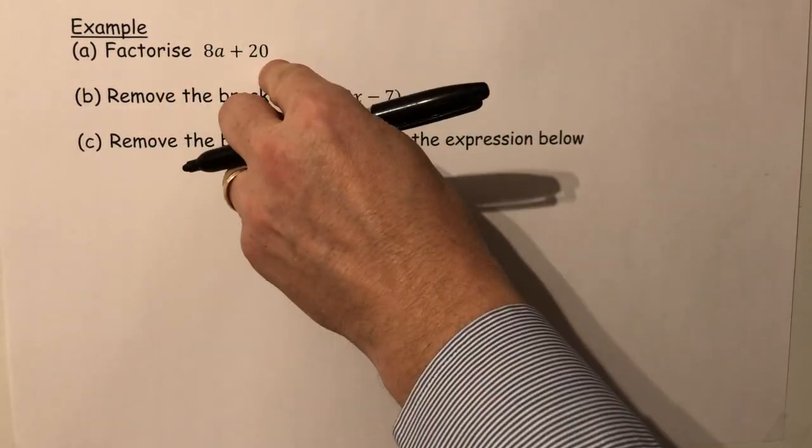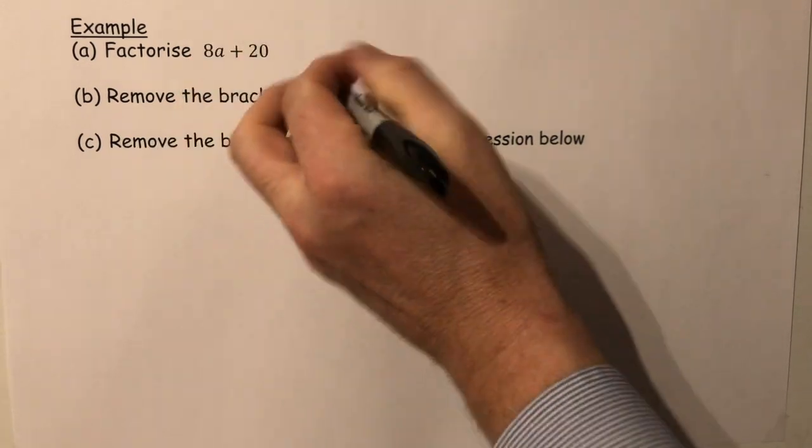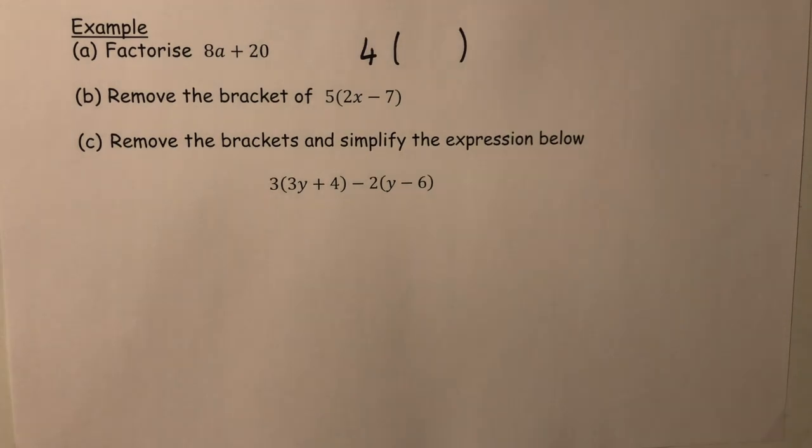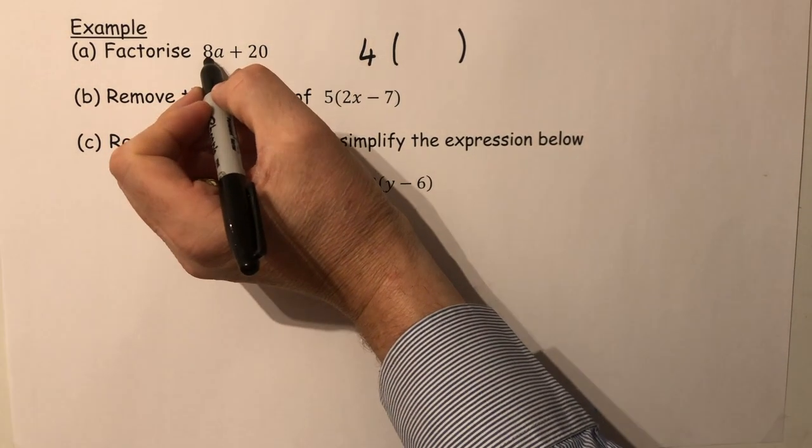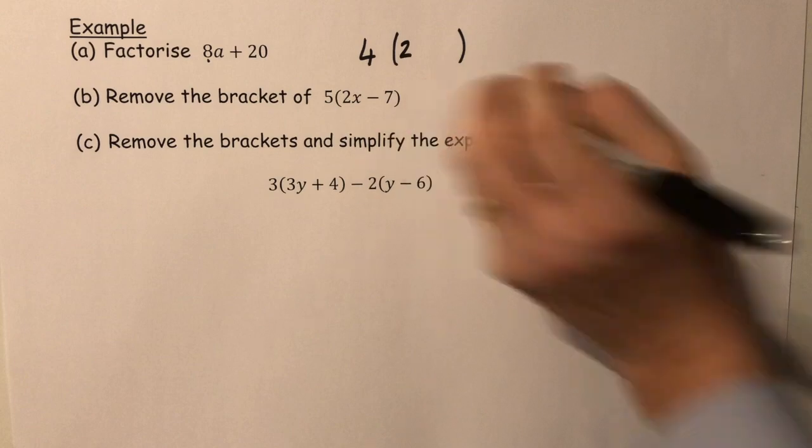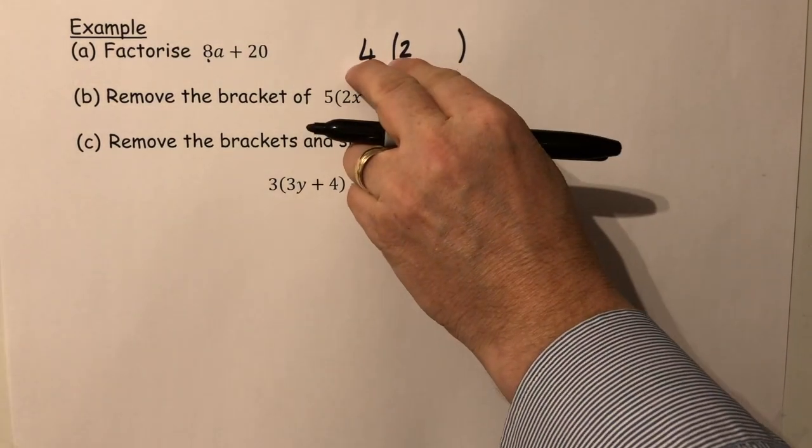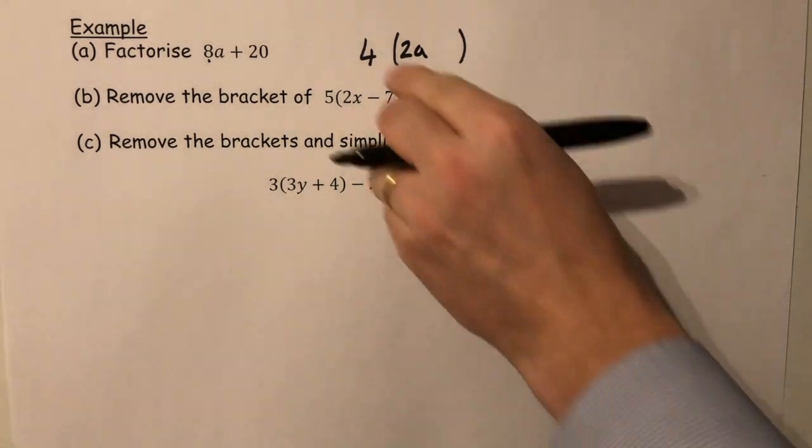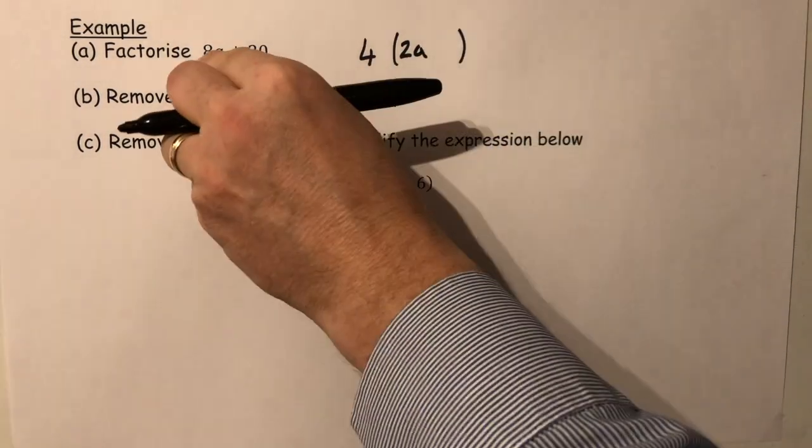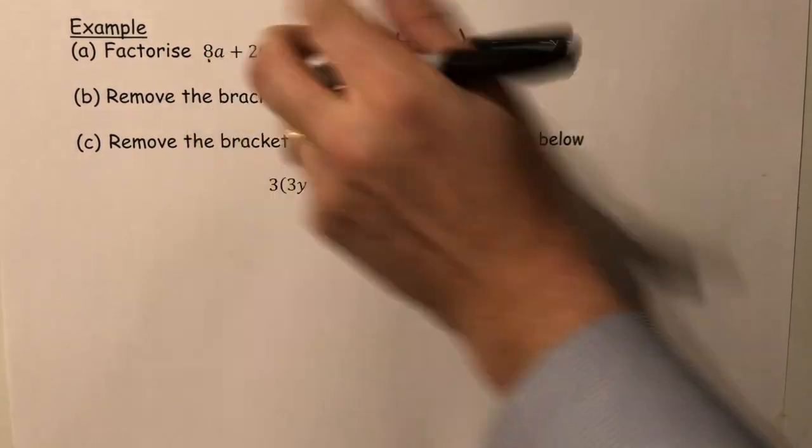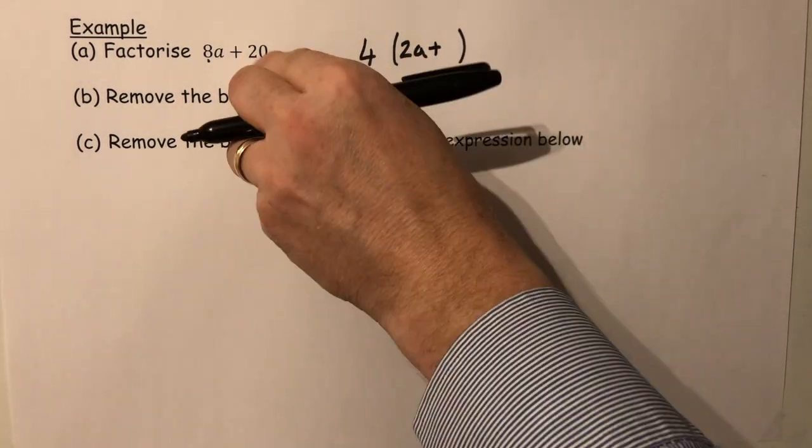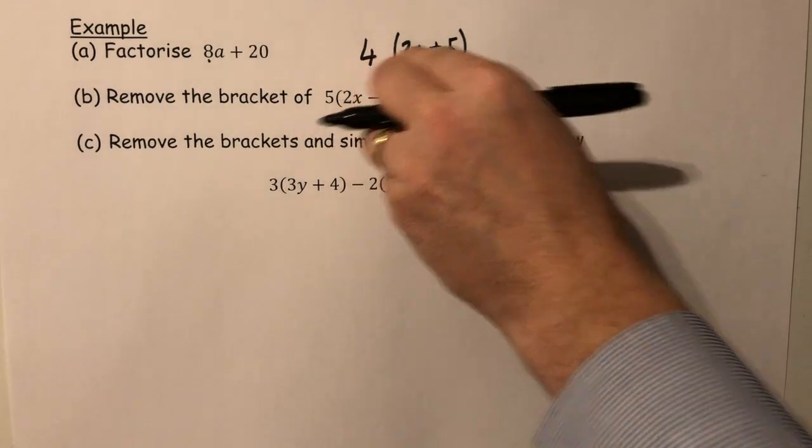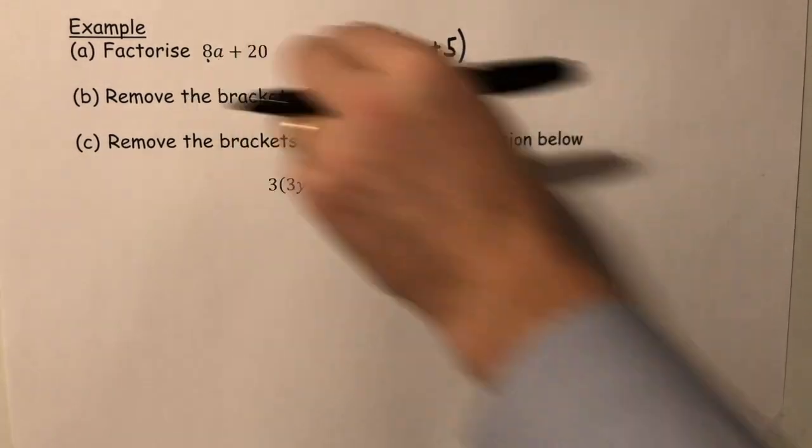So we put four outside of a bracket. Now four goes into eight twice, so we need a two inside the bracket to make the eight. However, it needs also the letter a, 2a, because four times 2a makes the 8a plus. So plus, and to make 20 I need five inside the bracket because four times the five makes the 20. Factorized, done.